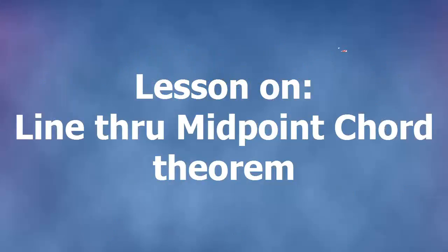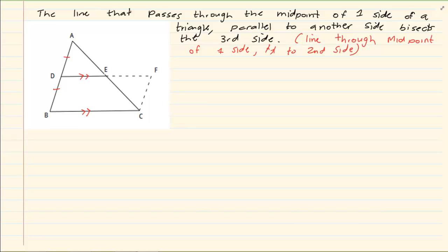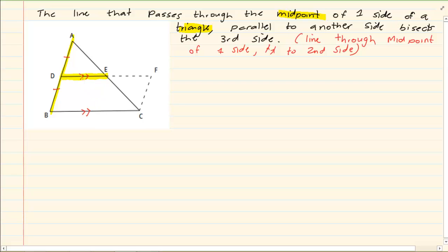Hi and welcome to my maths class. Today we're going to do the theorem that states if a line passes through the midpoint of one side. It means I have a line, and there is another line cutting one part of the triangle right in the middle — passing the midpoint of one side of the triangle. Then it is parallel to another side; the same line we discussed is parallel to the third line.